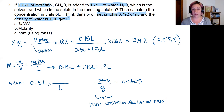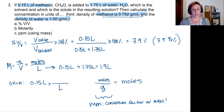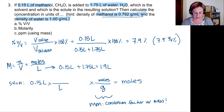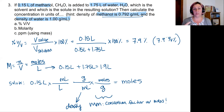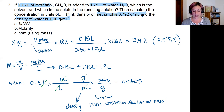Now I have grams, and I have something that connects grams and volume: density. I can set up a conversion with grams on top and milliliters on the bottom from that density. That just leaves milliliters, which I can convert using a liter-to-milliliter metric conversion. My units cancel: liters cancel, milliliters cancel, grams cancel, leaving me with moles.